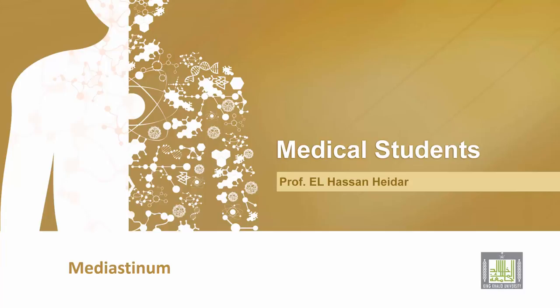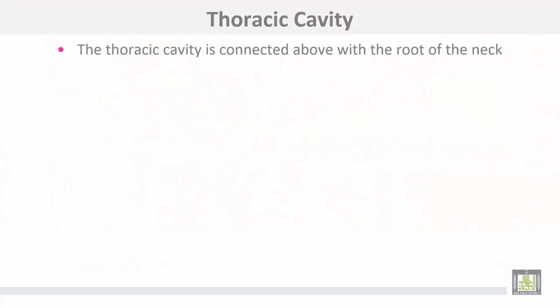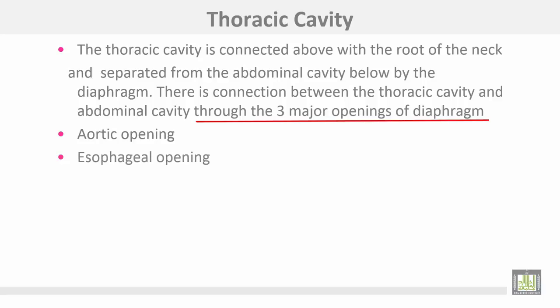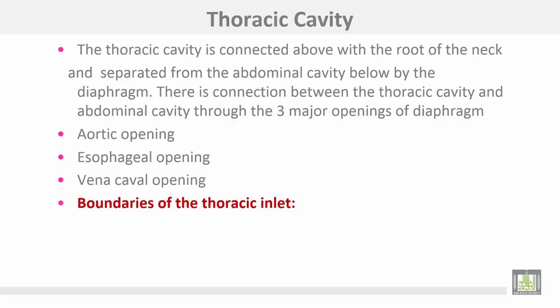To start with, the thoracic cavity and mediastinum: the thoracic cavity is bounded by the thoracic inlet upwards, connected with the root of the neck, and separated from the abdominal cavity below by the diaphragm. There is a connection between the thoracic cavity and the abdominal cavity through three major openings of the diaphragm: number one, the aortic opening; number two, the esophageal opening; number three, the vena caval opening.